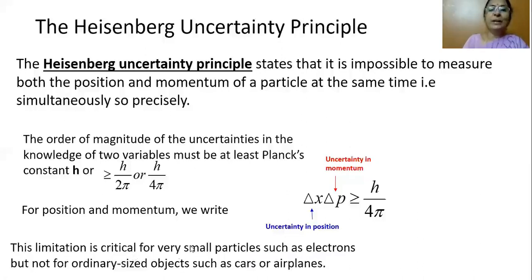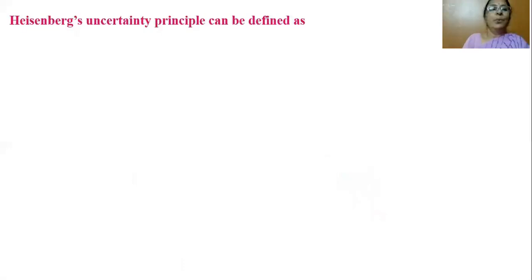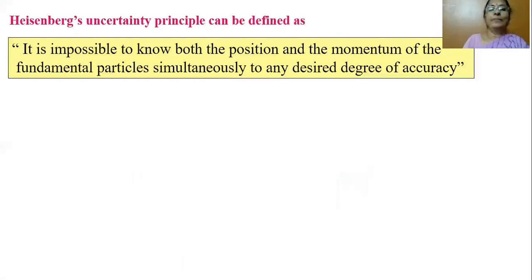This limitation is critical only for very small particles such as electrons, but not for ordinary-sized objects such as cars and airplanes. So Heisenberg uncertainty principle can be clearly defined as: it is impossible to know both the position and momentum of fundamental particles simultaneously to any desired degree of accuracy.